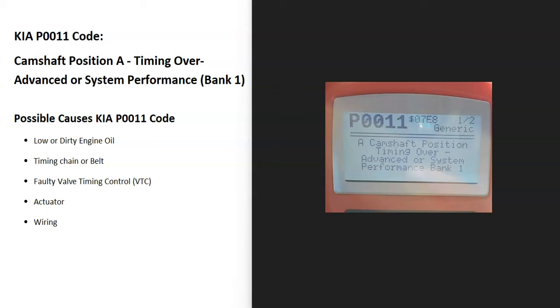Today I'll talk about Kia with the P0011 code, what it is and how to fix it. What is a Kia P0011 code? It's a camshaft position timing over advance or system performance bank one.